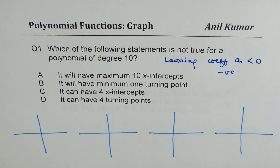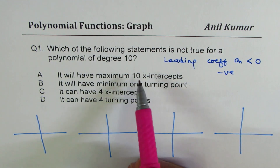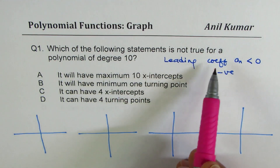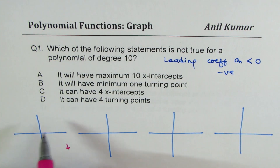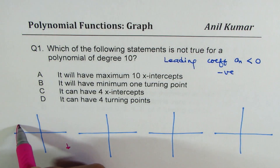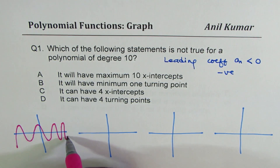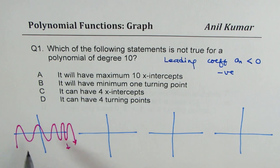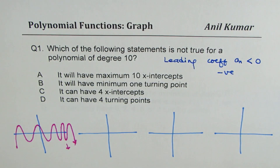First: it will have maximum 10 x-intercepts. Well, that's correct. If the degree is 10 and the leading coefficient is negative, the right side is down. So maximum could be 10 x-intercepts — all linear factors — resulting in the first case. So that is true.